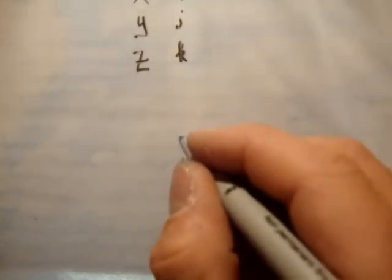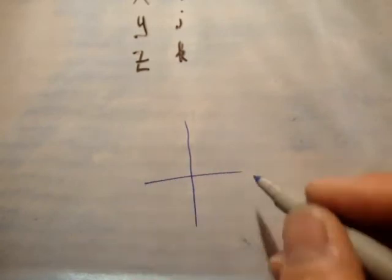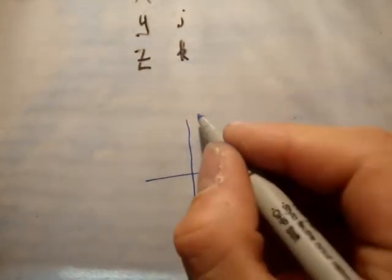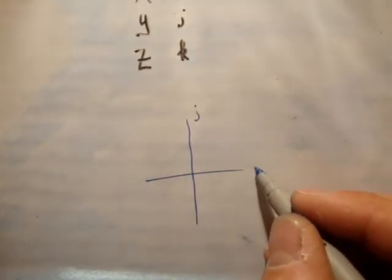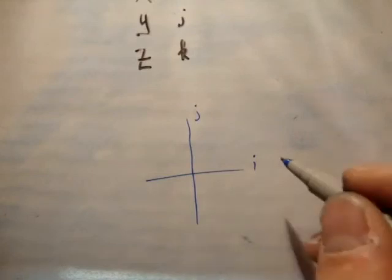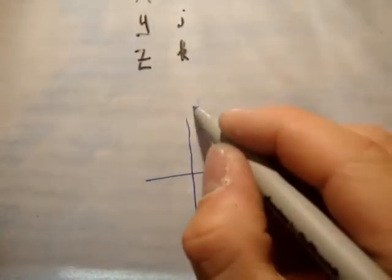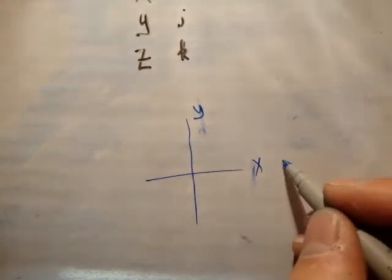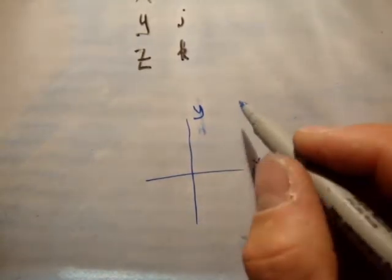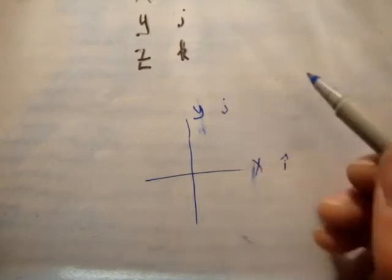Now, in the fundamental applied math book, it kind of blurs what a dimension and what a unit vector is, because it will say, it will draw its XY plane, and it will say this is the J axis, and this is the I axis. Now, that isn't technically correct. This is the X axis. This is the Y axis. The X axis has unit vector I, and the Y axis has unit vector J.